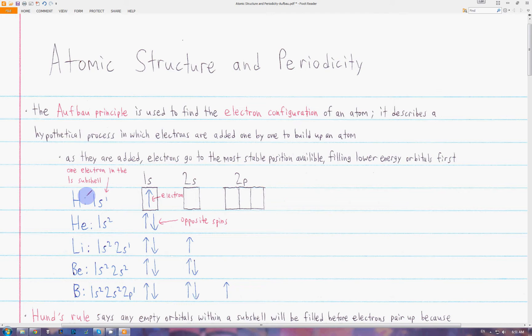Hydrogen has one electron, so that one electron will go into the 1s subshell, since that's the lowest energy subshell available. We denote the one electron with this superscript above the s in the 1s subshell.